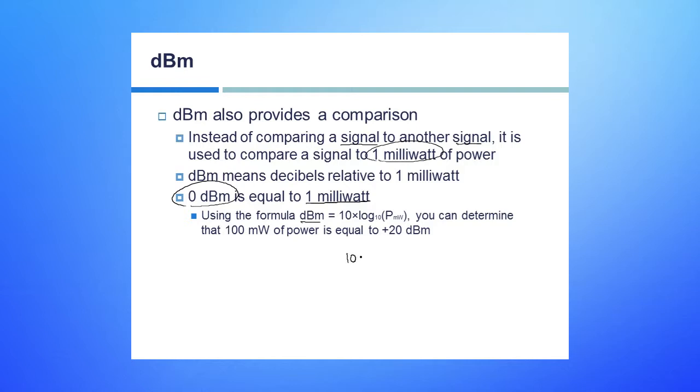If I said, I've got 10 times the log base 10 of 100 milliwatts, well, that logarithmic part comes out to 2. And the 10, of course, multiplied by that, tells me that I'd be at 20 DBM.